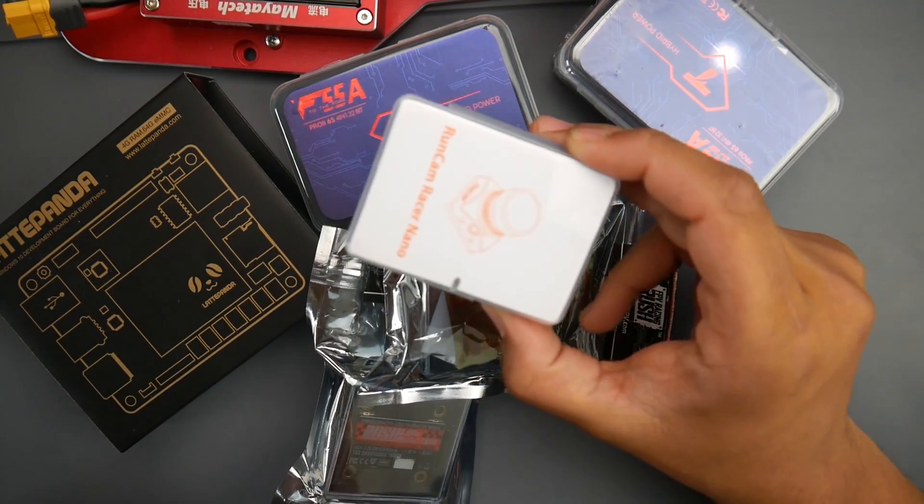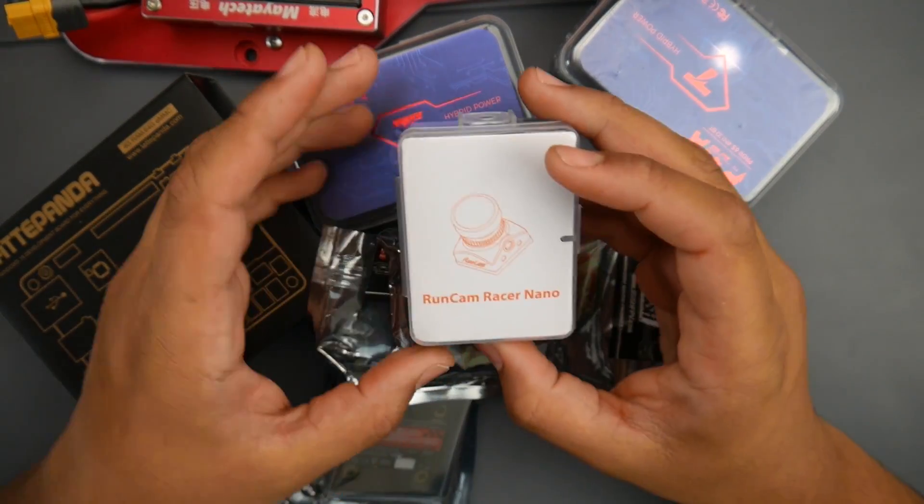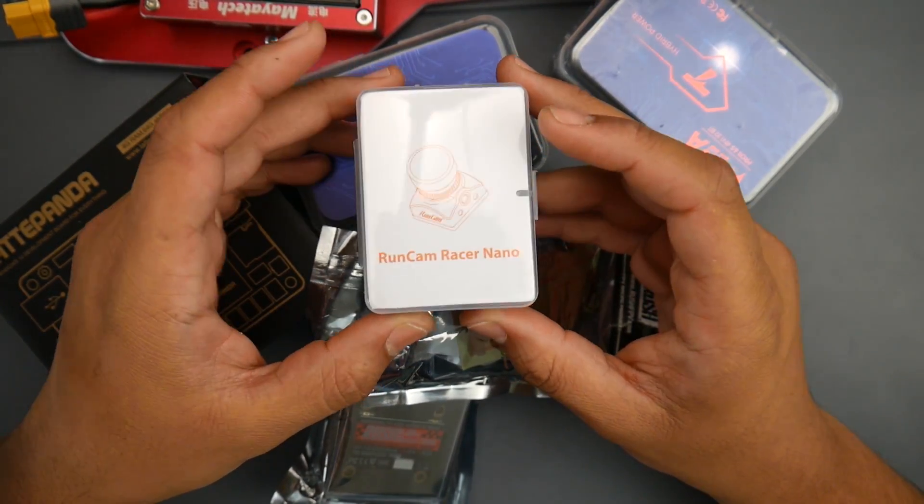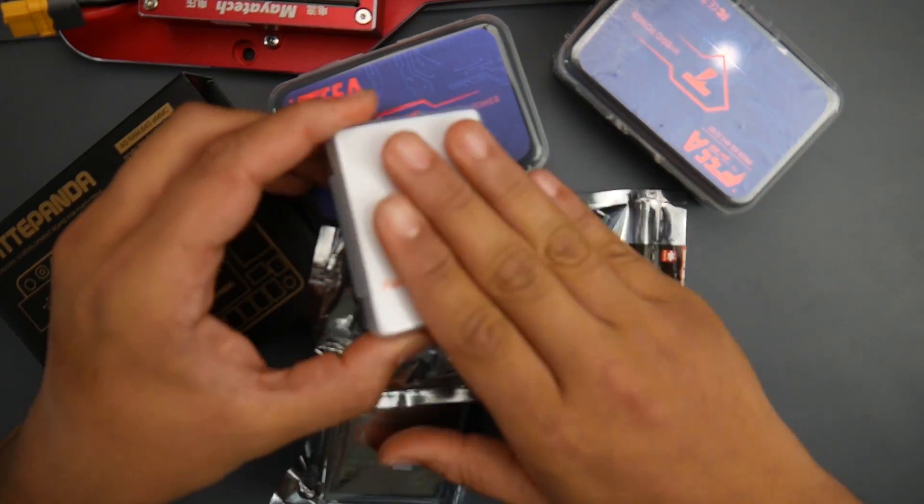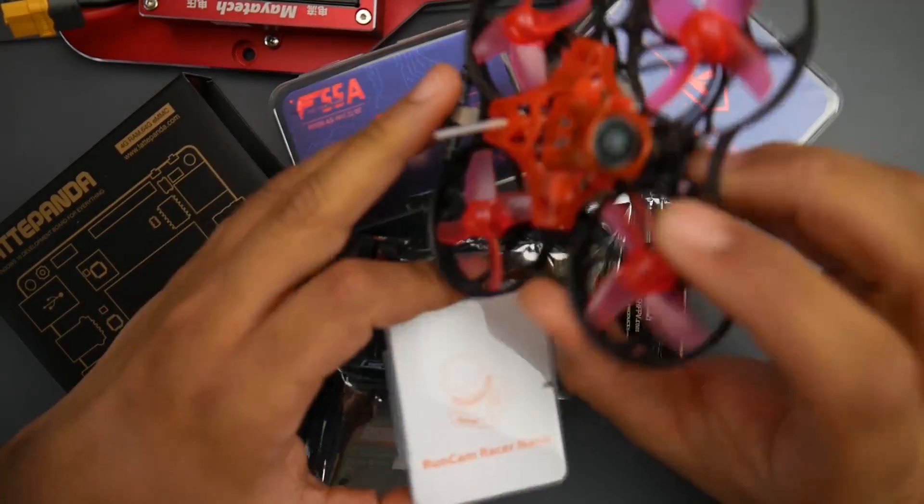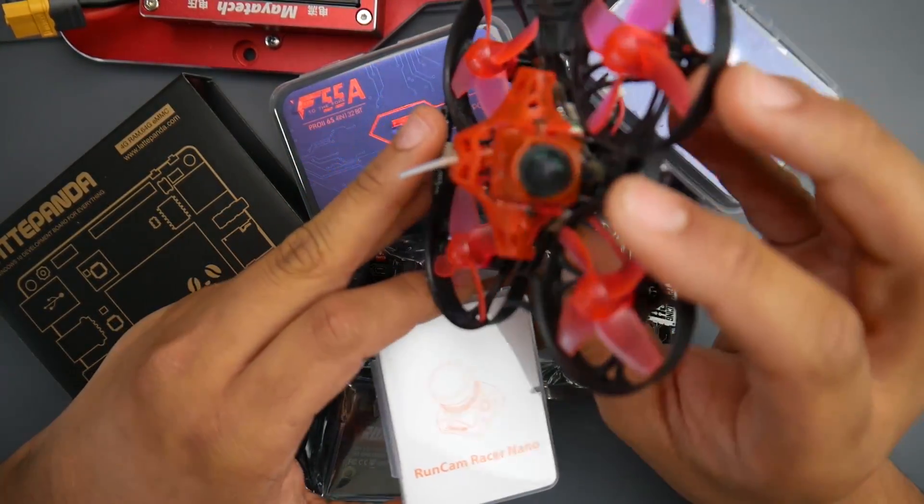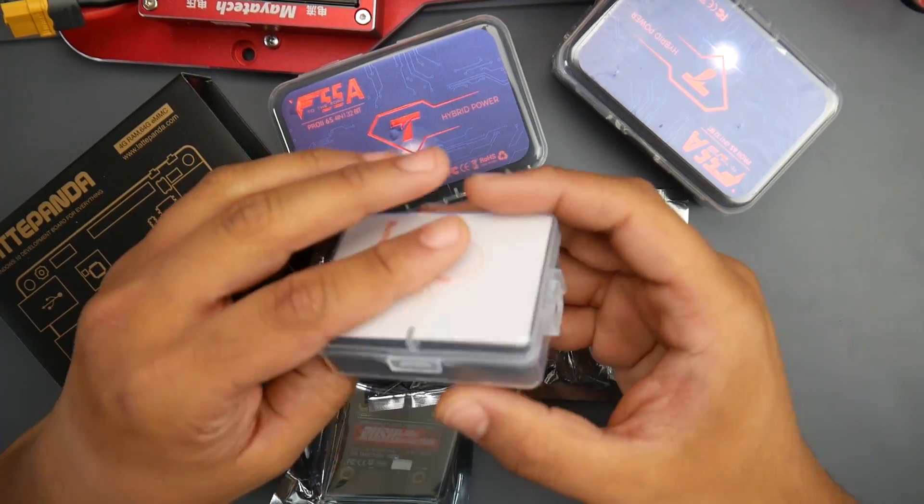RunCam also contacted me and this is their new RunCam Racer Nano. This is RunCam's answer to the Caddx EOS I think that's found on all these little micros, so people can pick some of these up now.